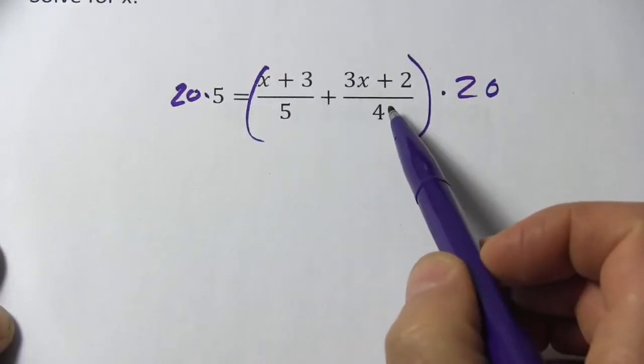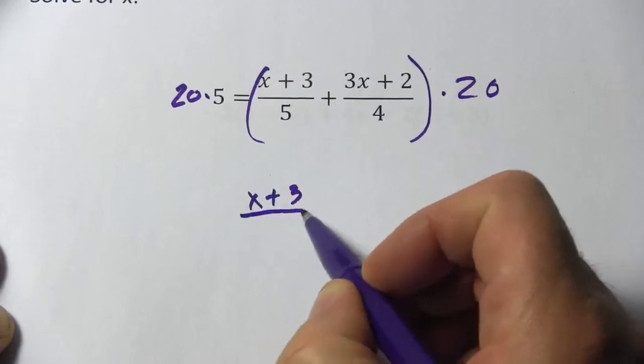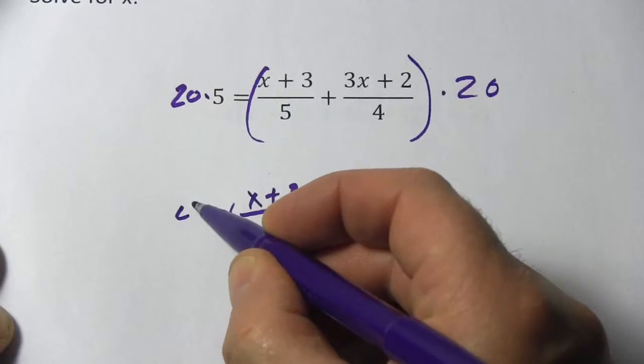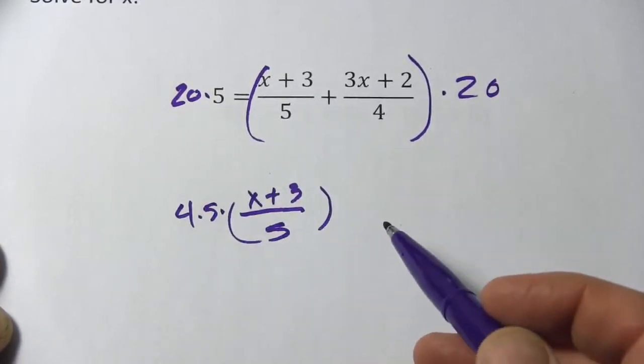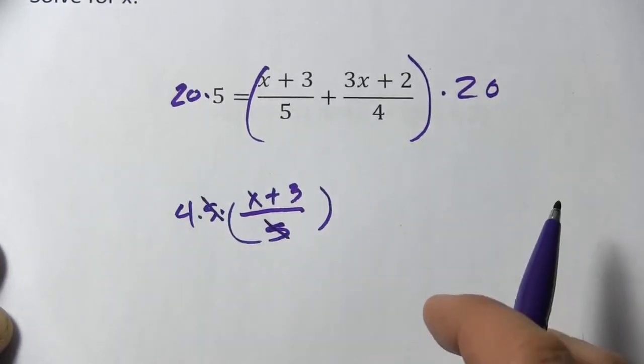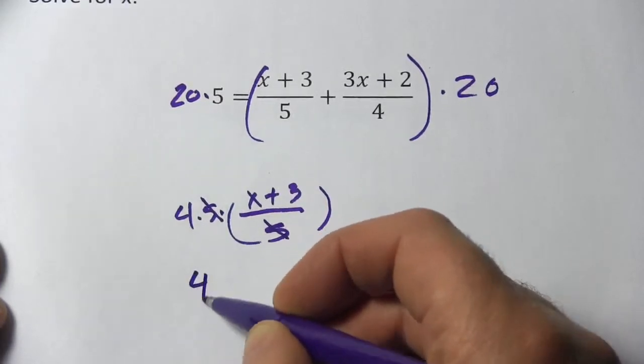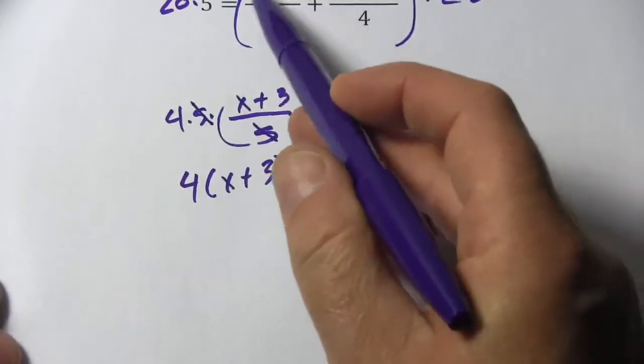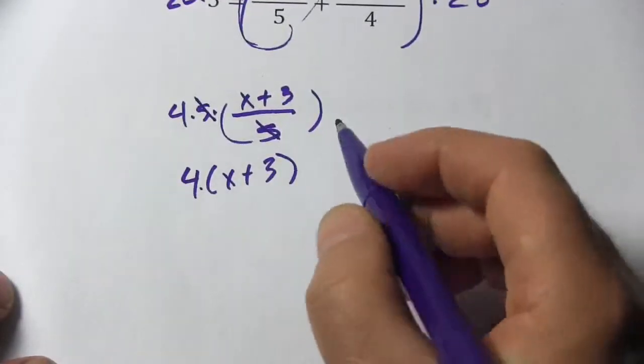And let's take these pieces one at a time. So I've got x plus 3 over 5 multiplied by 20, and I'm going to write this 20 as 4 times 5. So we're multiplying that by 4 times 5. This way, I can see that the 5s cancel out, and this whole thing just becomes 4 times x plus 3. So that's this chunk right here, 4 times x plus 3.